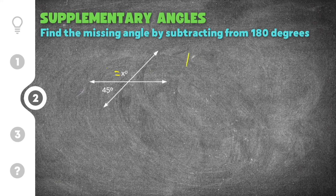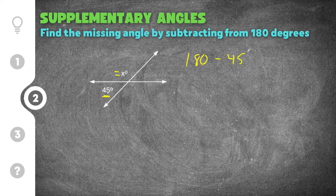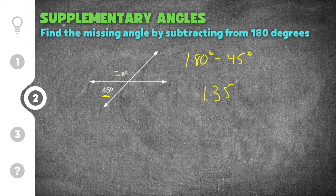So we're going to say 180 minus the angle we do know. So we know 45 this time. So we're going to say 180 minus 45 degrees. When you subtract those two you will end up with 135 degrees.